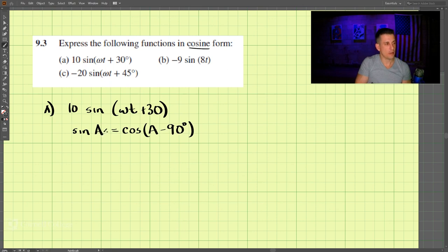So if we apply this, we can then transform this into a cosine function. So we get 10 cosine of omega t plus 30 degrees minus 90 degrees.